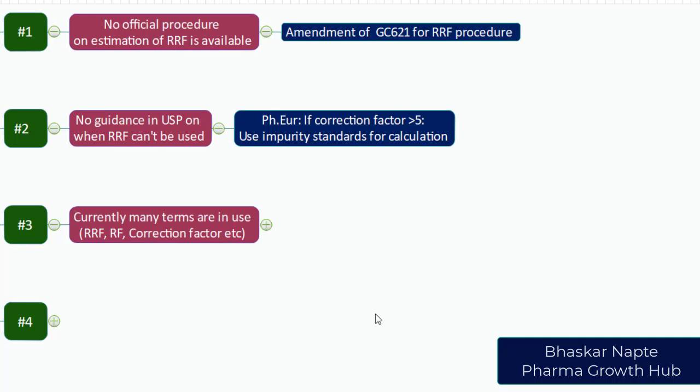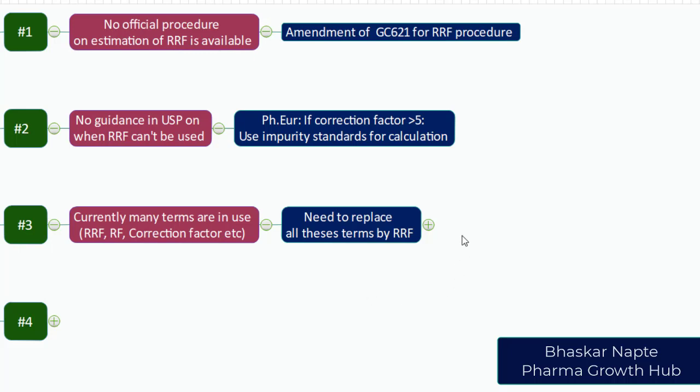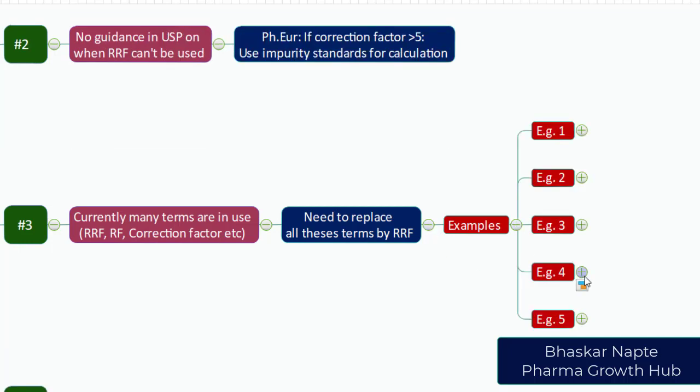Challenge number three: currently many terms are in use — relative response factor, response factor, correction factor, etc. — and that creates a lot of confusion for the end user. What is proposed is that we harmonize all these terms and replace them with a common term, such as relative response factor or RRF.